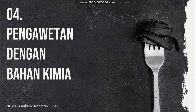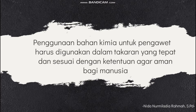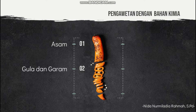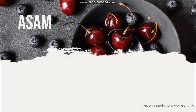Yang keempat itu pengawetan dengan menggunakan bahan kimia. Pengawetan bahan pangan juga bisa dilakukan dengan penambahan bahan kimia tertentu yang sudah diketahui memiliki efek mengawetkan. Penggunaan bahan kimia untuk pengawet harus digunakan dalam takaran yang tepat dan sesuai ketentuan agar aman untuk manusia. Bahan kimia pengawet yang bisa digunakan antara lain asam, gula dan garam, benzoat, asam sorbat, sulfur dioksida (SO2), dan antioksidan.